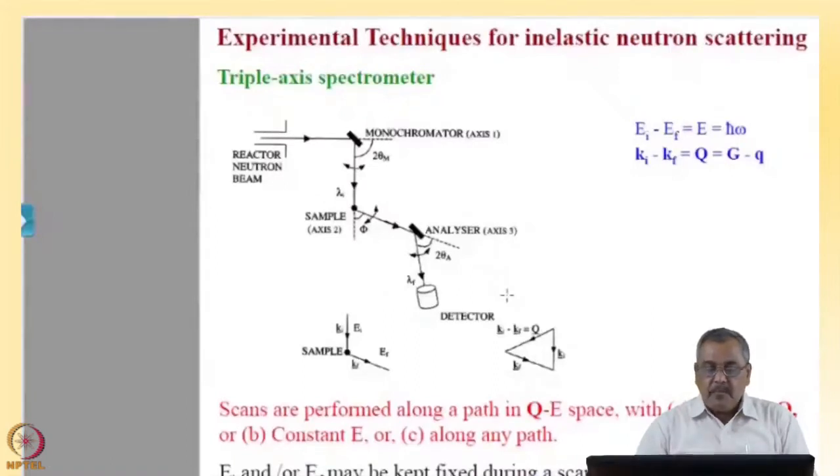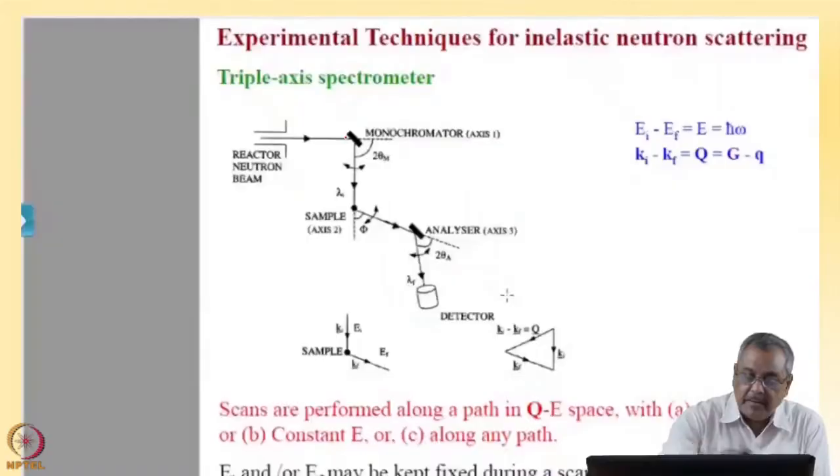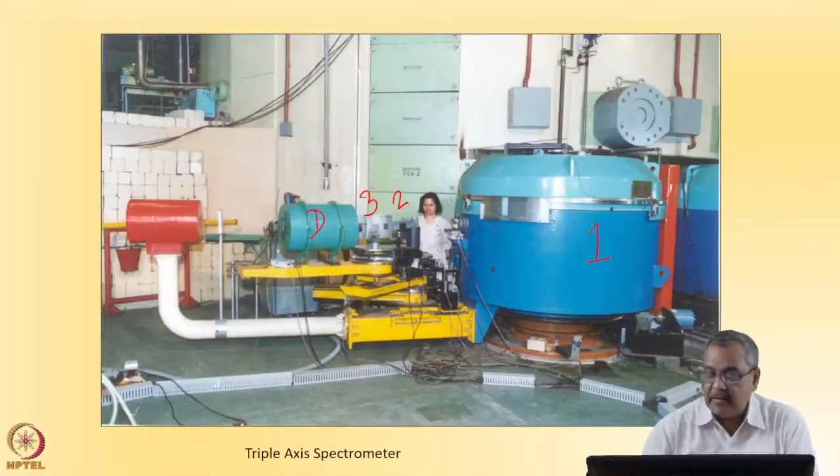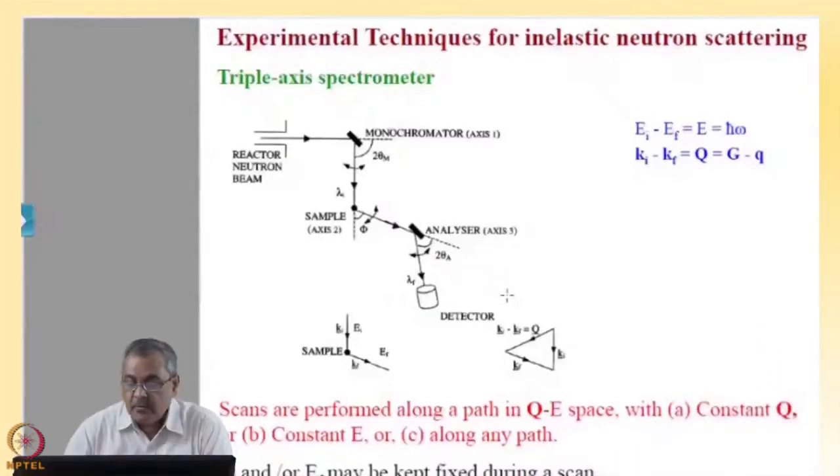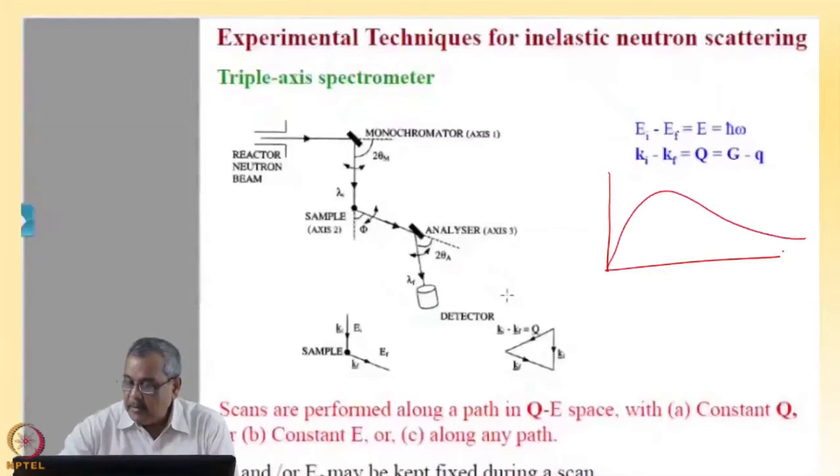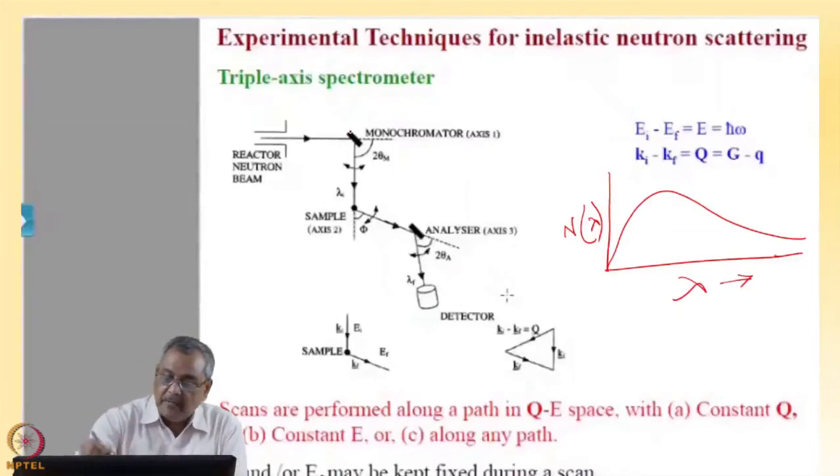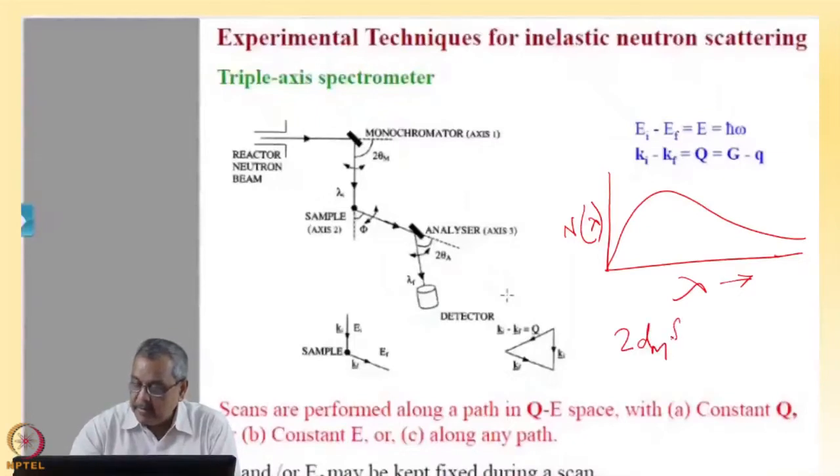First in the beam path, inside this drum at the center of the drum there is a monochromator. The role of monochromator is to get a monochromatic beam of neutrons. If I consider the reactor flux as Maxwellian, then the role of this monochromator is that we have a known d spacing. So 2d monochromator sin θ equal to nλ.